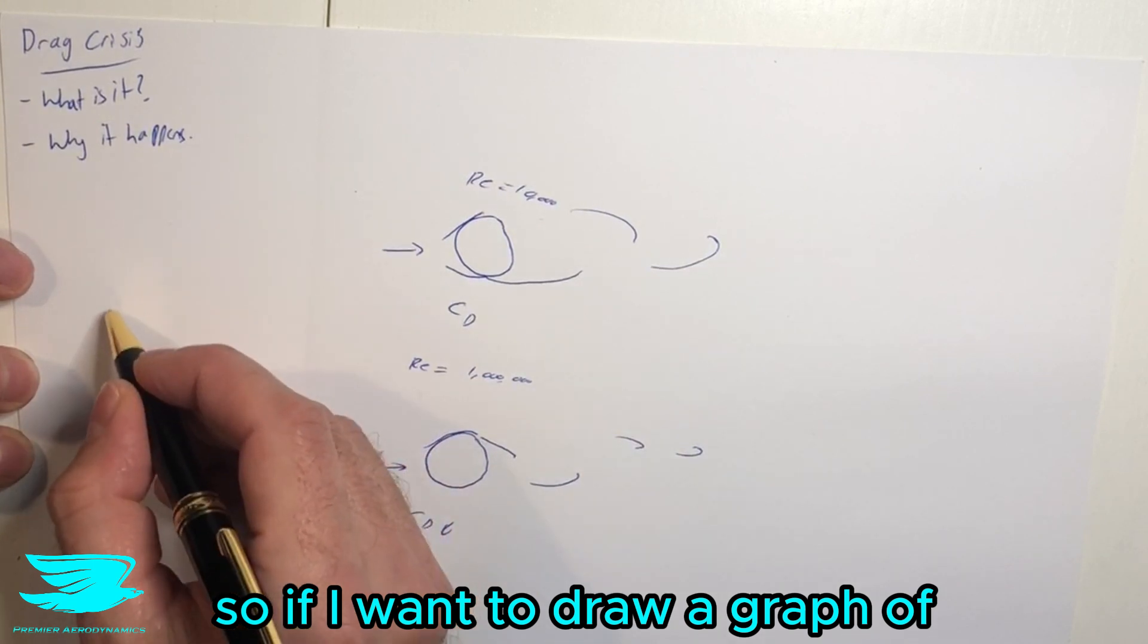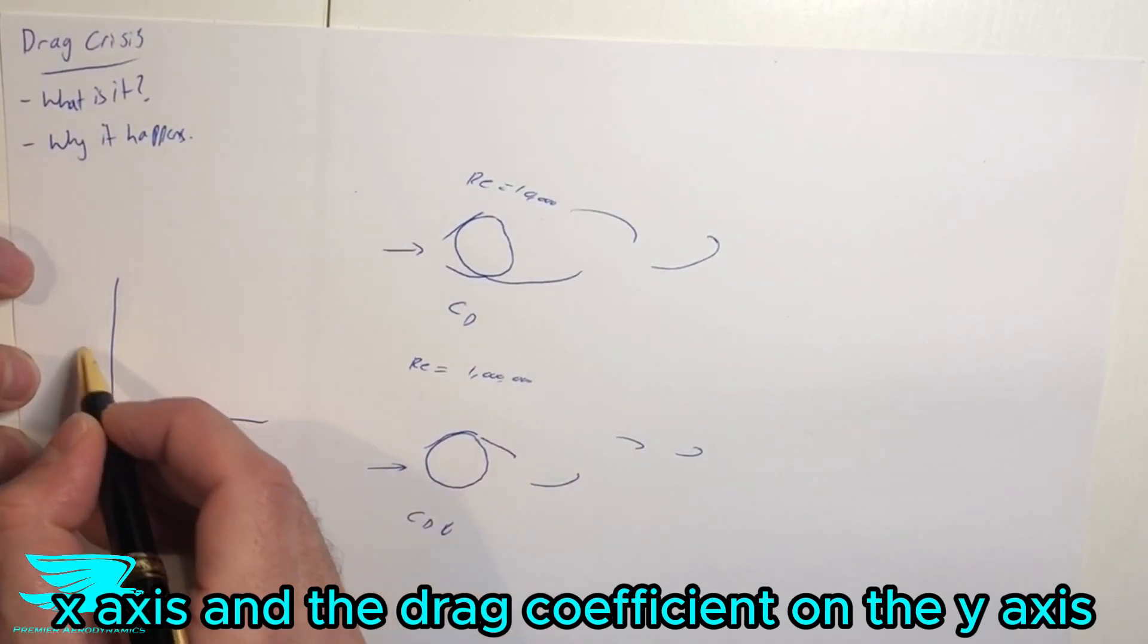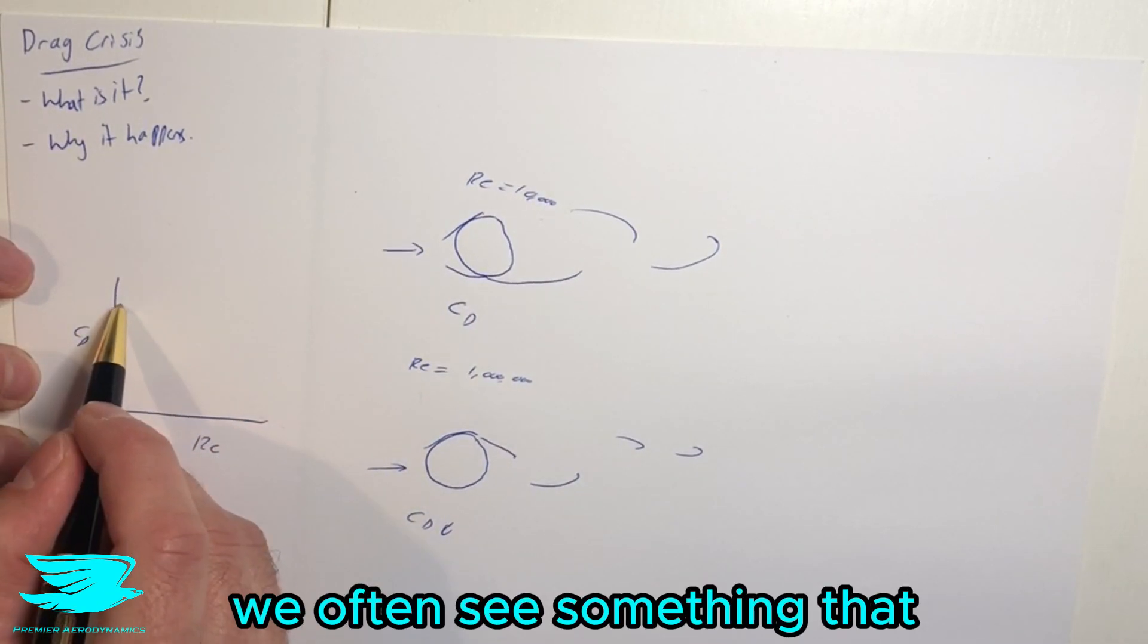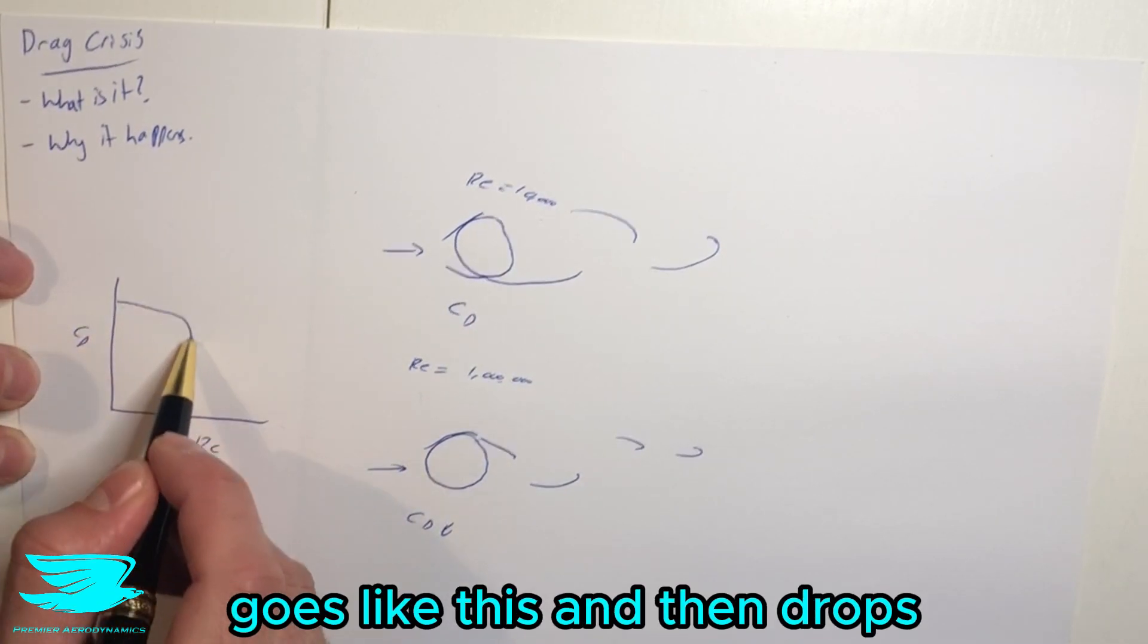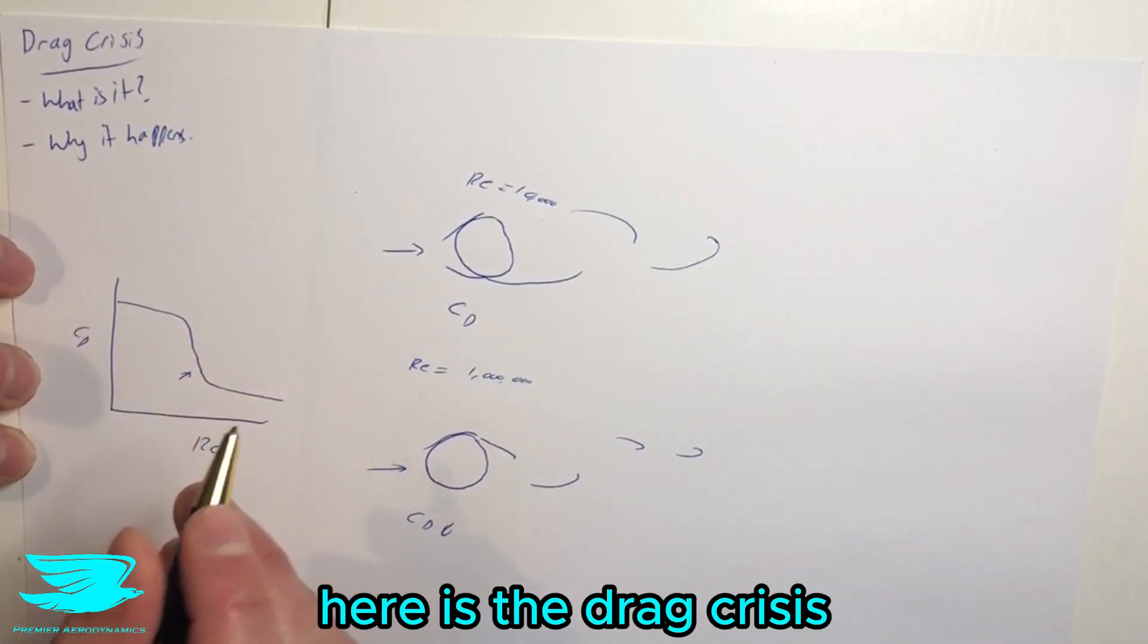So if I were to draw a graph, let's say we have the Reynolds number on the x-axis and the drag coefficient on the y-axis. We'll often see something that goes along like this and then drops very suddenly and then continues along. This point here is the drag crisis.